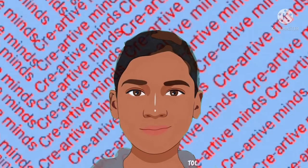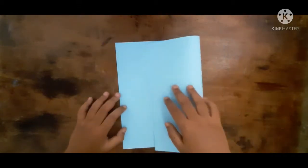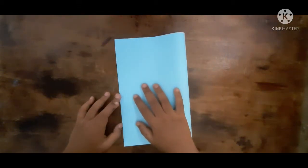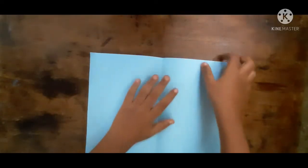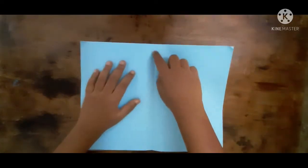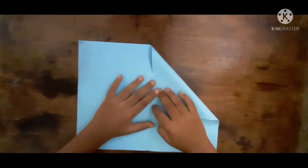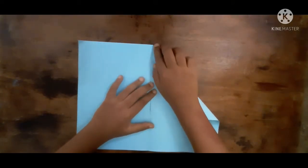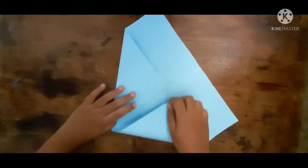Let's start. First fold the paper into half, then open it. You can see a line in center of the paper. Fold it like this on the center of the paper. On the other side also.